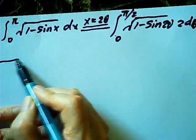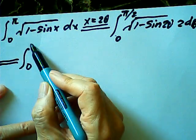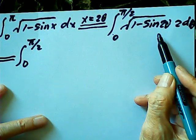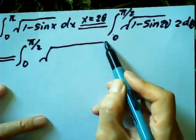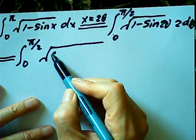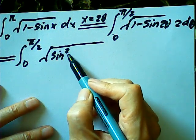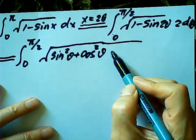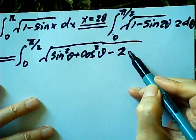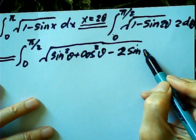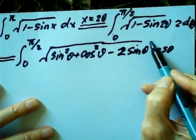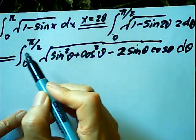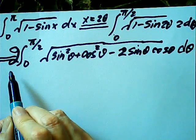So this one is equal to the integral from 0 to π/2. And this one is equal to: negative sine squared plus cosine squared theta — that is one — minus two sine theta cosine theta. And dθ. I have a two in front.